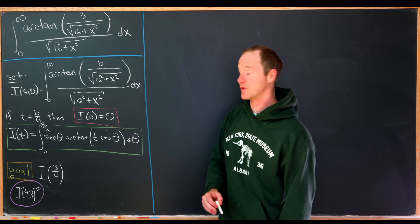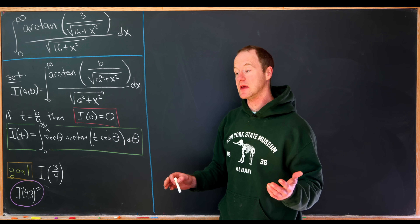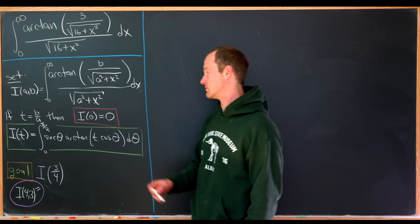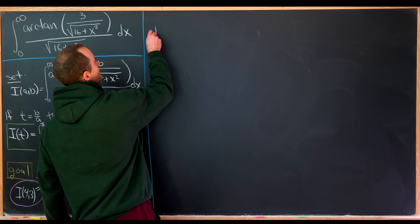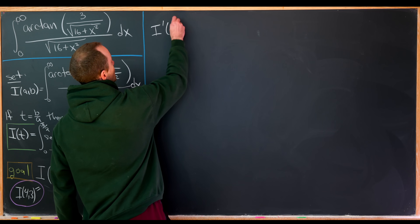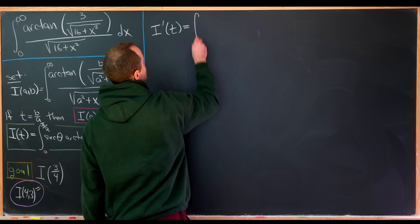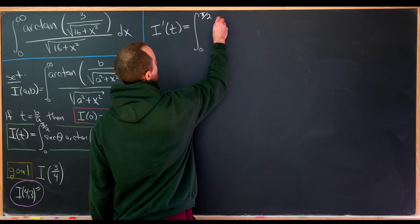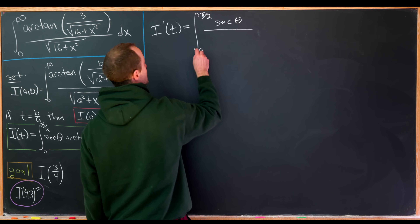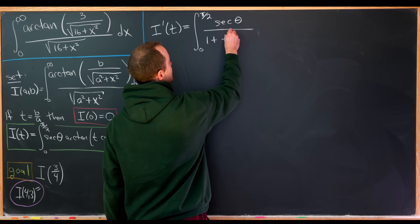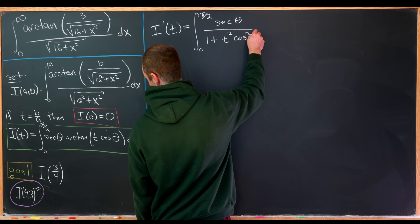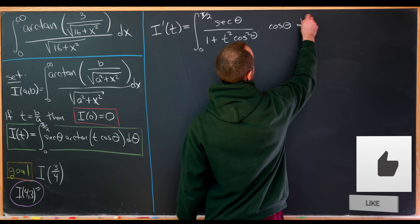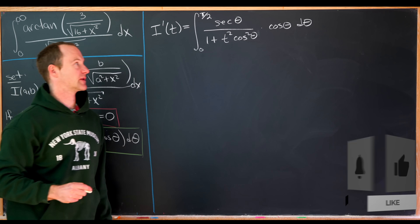Taking the derivative of I with respect to t, being careful of the chain rule, notice that the t inside the inverse tangent multiplied by cosine gives us: I prime of t equals the integral from 0 to pi over two of secant theta over 1 plus t squared times cosine squared theta, times cosine theta d theta.